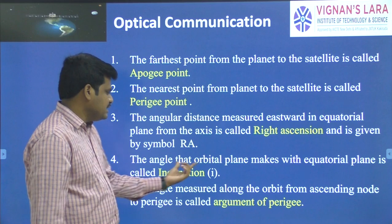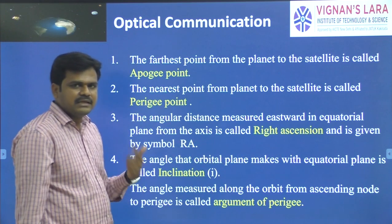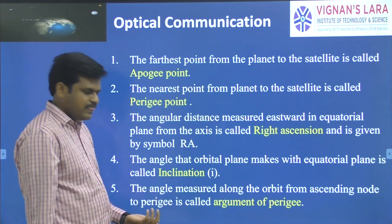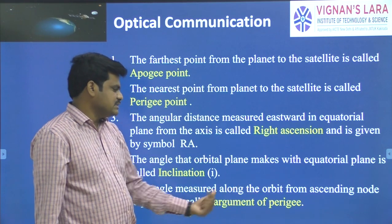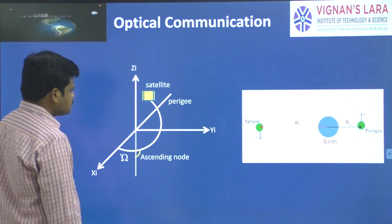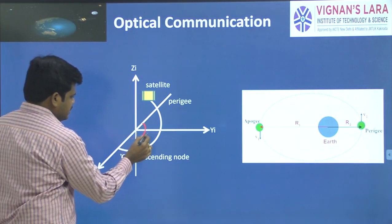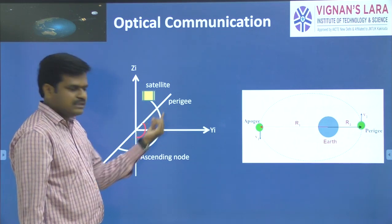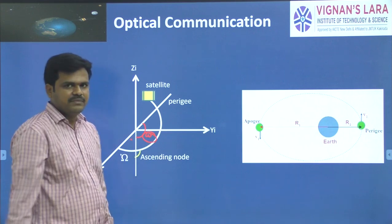Inclination is the angle that the orbital plane makes with the equatorial plane, greater than 0 degrees — it is called inclination. The argument of perigee is the angle measured along the orbit from the ascending node to the perigee. The angle measured from the ascending node to the perigee path is called argument of perigee, denoted as omega.